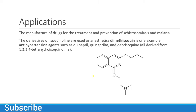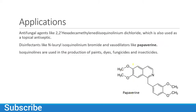Regarding the applications of drugs containing isoquinoline: the first drug is dimethylisoquine, which is an anesthetic drug. Isoquinoline is also present in anti-hypertensive agents such as quinapril and its derivatives. Searching online will show the structure of quinapril. These are all drugs containing isoquinoline and its derivatives. Another drug also contains the isoquinoline structure and is used as a disinfectant.